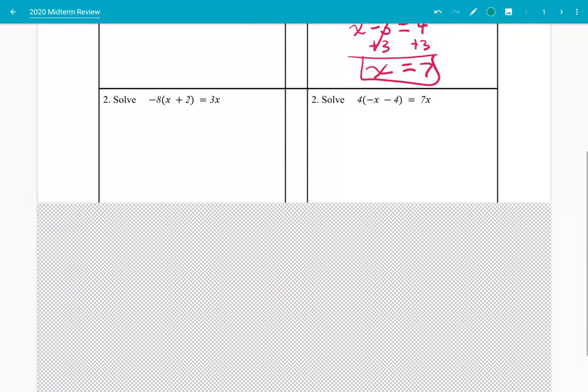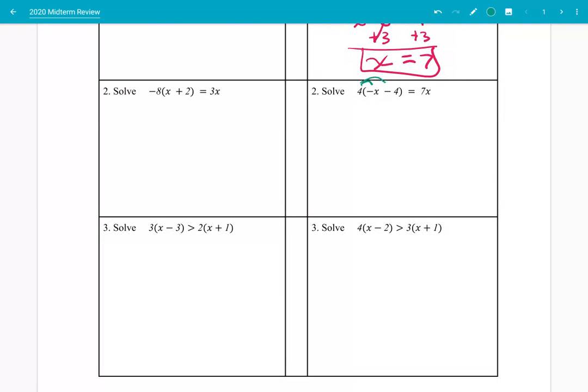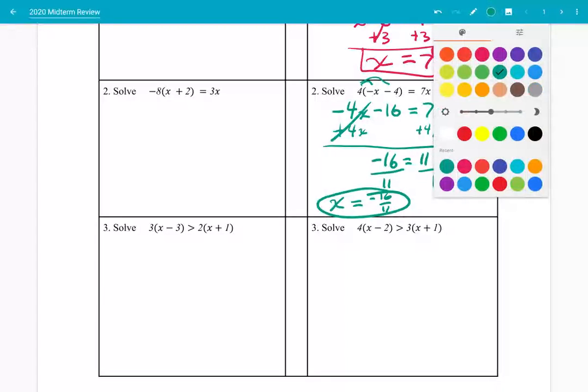Let's solve this. We got some negatives inside there, so minus 4x. 4 times a minus x is minus 4x, 4 times a minus 4 is minus 16, and that equals 7x. Let's add 4x to both sides so we don't have this negative one over here. Minus 16 equals 11x. Then divide by that coefficient. x equals negative 16 elevenths. It's an ugly fraction but sometimes it's got to be done.